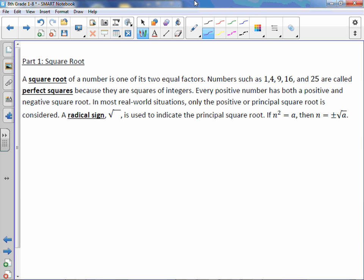Every positive number has both a positive and negative square root. In most real-world situations, however, only the positive or principal square root is considered. A radical sign, or what you probably know as a square root sign, is used to indicate the principal square root. If n squared equals a, then n equals, this symbol right here means plus or minus, which is just saying the positive and negative answer.